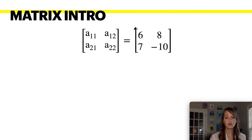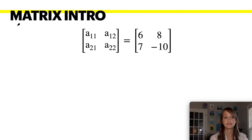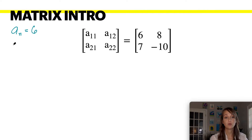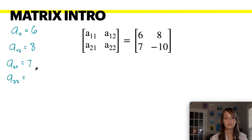A matrix is a rectangular array of elements and entries. A[1,1] is the first row in the first column — this entry represents six. A[1,2] is the first row in the second column and that represents eight. A[2,1] is the second row, first column and that represents seven. A[2,2] is the second row in the second column, which represents negative ten.